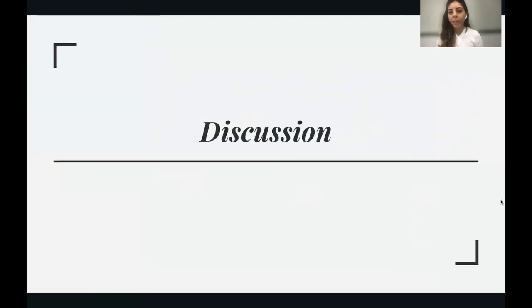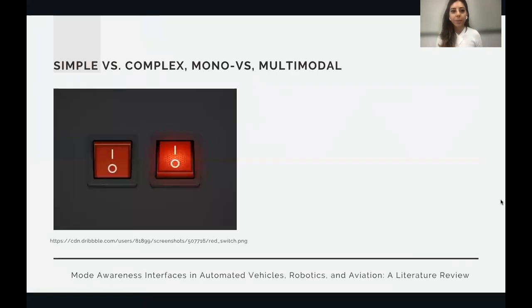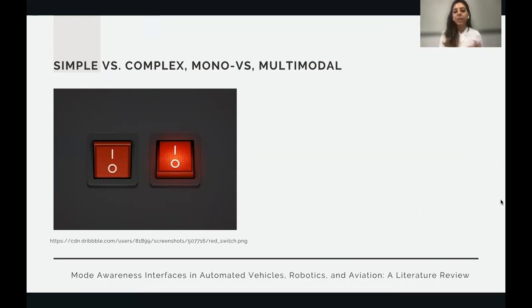Overall, we had three main discussion points. The first one is simple versus complex, mono versus multimodal. Across all three domains, we saw that these mode awareness indicators have some sort of on-and-off button kind of interface showing whether the automation is active or passive. Because this worked for a long period of time when automation was simple with limited capabilities, this was fine. But when we look at the current automation levels, which are really improved with advanced functionalities, these indicators are no longer sufficient to communicate the full spectrum of automation.